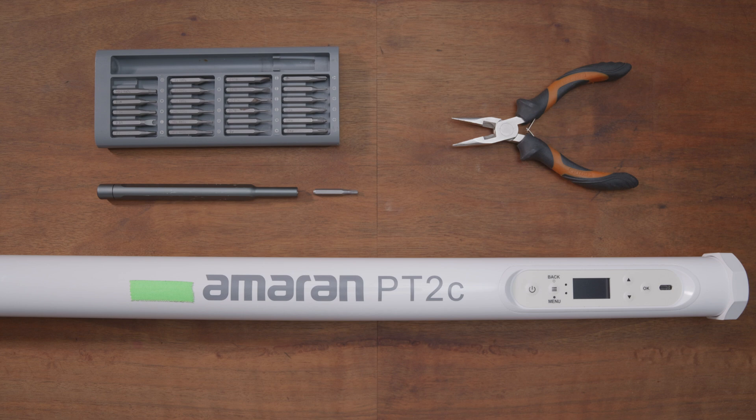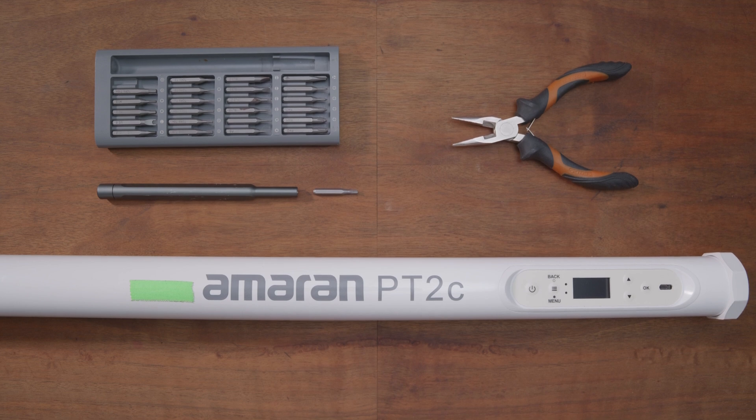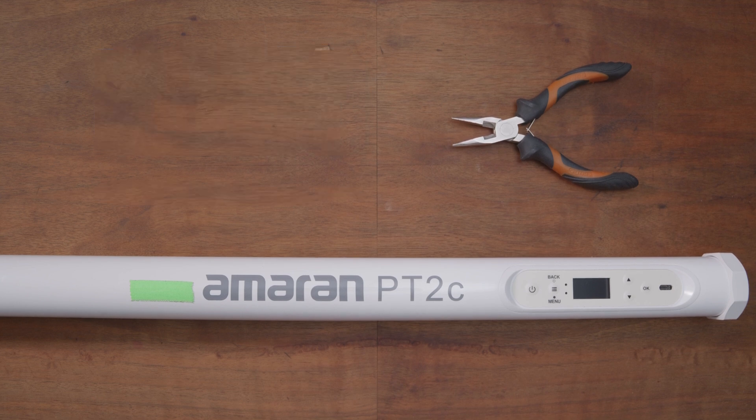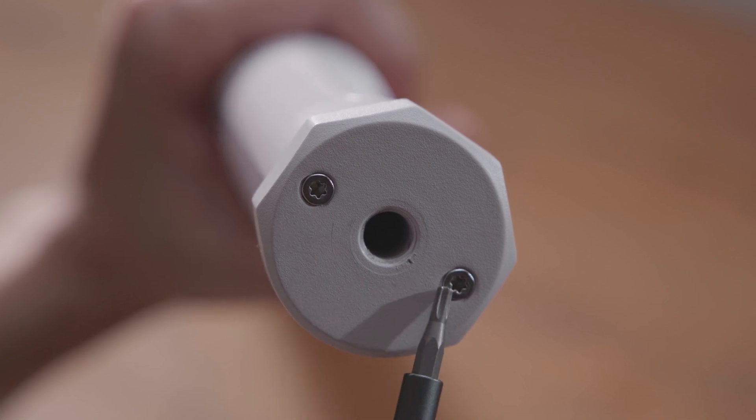Here is what you'll need to disassemble. A pair of needle nose pliers and some precision screwdrivers. Let's start by removing these torx screws.